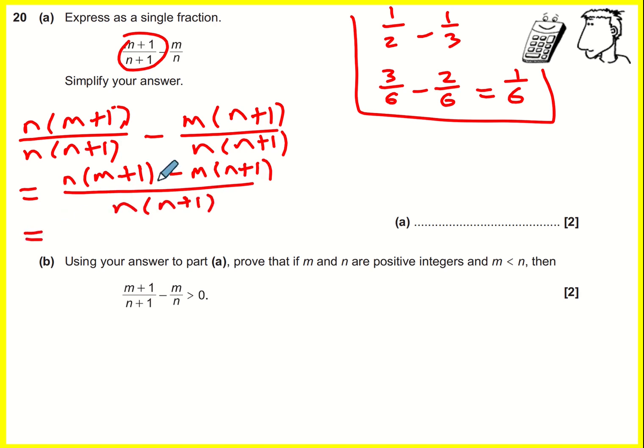And next, I would expand the bracket. So it would be nm plus n minus mn minus m, expanding that bracket. I need to multiply through by minus m for both, divided by n times n plus 1.